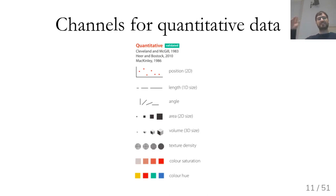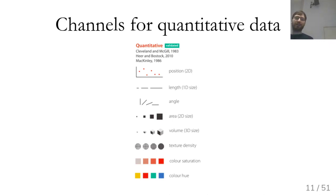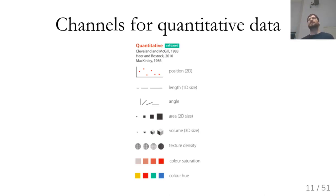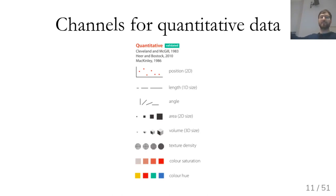Comparing the area of two things is much much harder than comparing lengths. This is a reason why pie charts are often considered worse than bar charts — in a pie chart you're using either angle or area, and these are harder to compare than length.